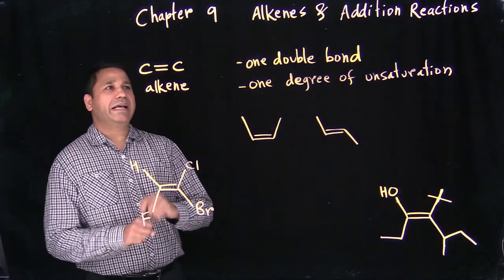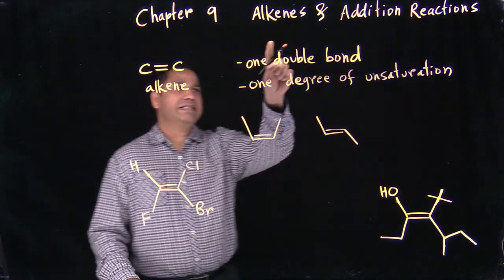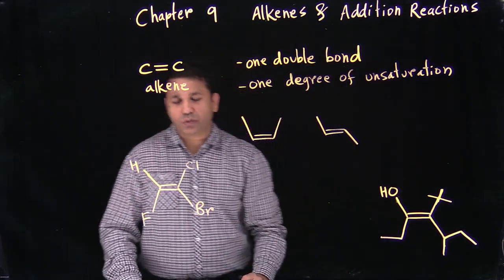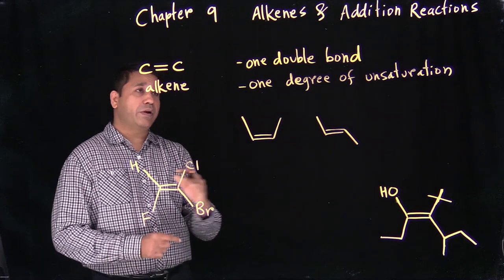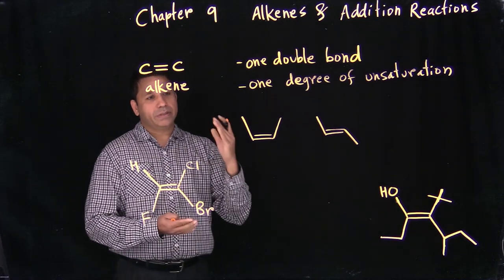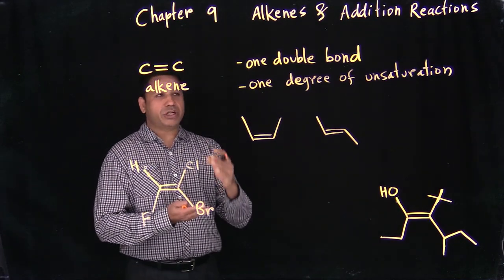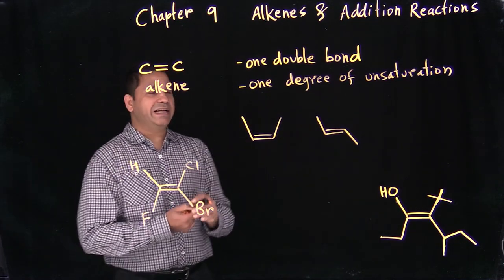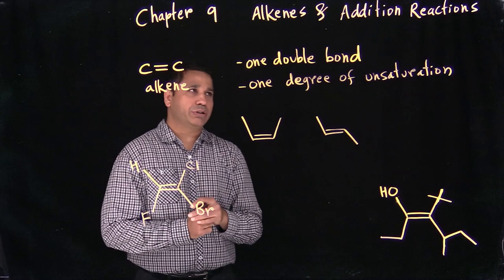Chapter nine is alkenes and addition reactions. We have different types of reactions — elimination, substitution — and the third category is addition reaction.